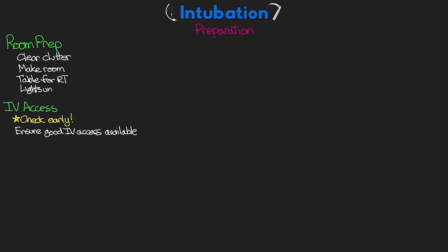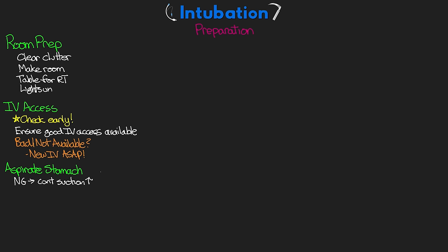Hopefully you've been staying on top of IV access throughout your shift, because the last thing you want in an emergent intubation is no functional IV with that added stress. Another prep step when possible is to aspirate the stomach. If your patient has an NG tube in place, put it on continuous suction and increase the suction to try to empty the stomach as much as possible, with the goal of preventing potential aspiration.